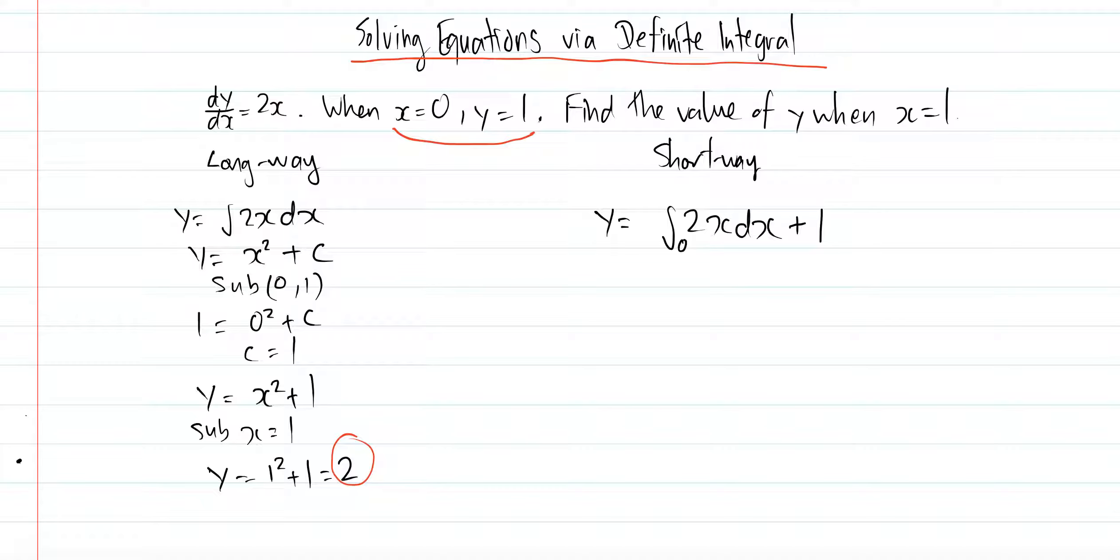On the top, your upper terminal, you put 1—whatever x value they ask you. If they ask you to find the value of y when x equals negative 100, you put negative 100 on top. It doesn't matter if negative 100 is smaller than 0; it always has to be on top. The point given to you is x on the bottom, the lower terminal, and the y value just after the integral.